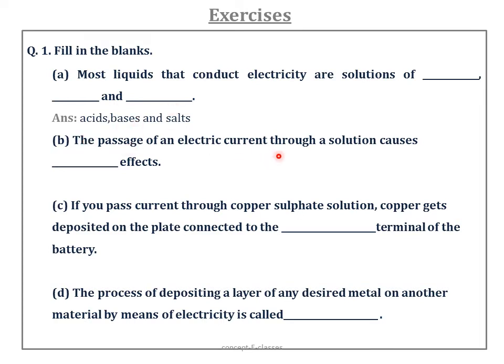B: The passage of an electric current through a solution causes chemical effects. We know that chemical changes can be observed when electric current passes through a liquid. C: If you pass current through a copper sulphate solution, copper gets deposited on the plate connected to the negative terminal of the battery, because copper ions are positive in charge and they deposit on the negative terminal. D: The process of depositing a layer of any desired metal on another material by means of electricity is called electroplating.